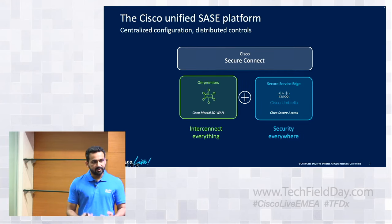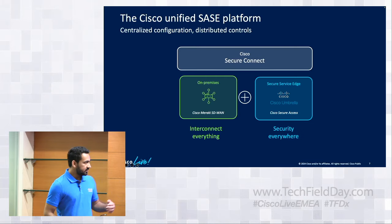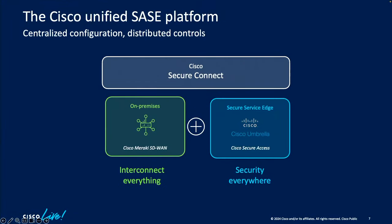What is Secure Connect built on? There are two robust platforms underneath: one is Meraki SD-WAN, and the other is the Umbrella SSE solution. They have been out there for a while, proven at scale with all the capabilities they bring to the table. What Secure Connect achieves is bringing these two platforms together and building a unified solution on top.